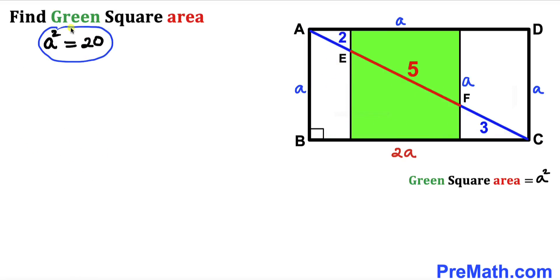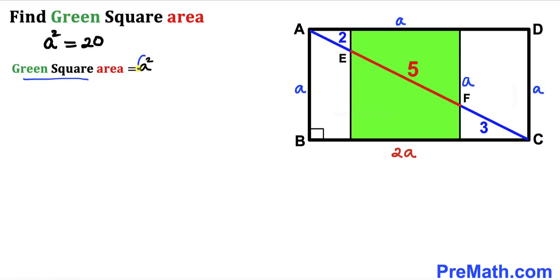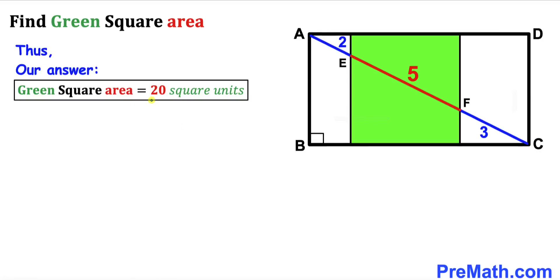In our final step, we calculate the area of the green shaded square. The green square area equals a², and a² = 20, so the area of the green shaded square is 20 square units. That's our final answer — thanks for watching, and please don't forget to subscribe to the channel for more exciting videos!